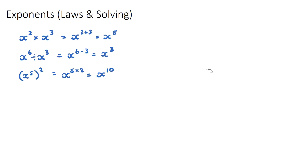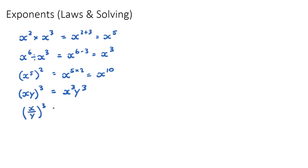The fourth rule: if you have (x·y) all to the power of 3 — two terms multiplied together with a power — you can split them up into the product of the two: x cubed times y cubed. Similarly, if we have (x over y) cubed, a fraction to a power, we just power both the numerator and denominator: x cubed over y cubed.